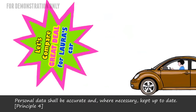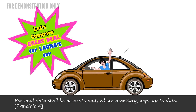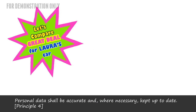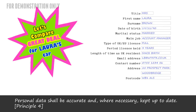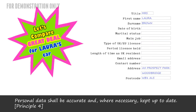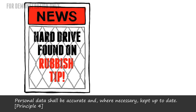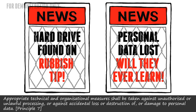It looks like Laura can get a better deal on her car insurance, and she wants to change the provider. What happens to the data the old company holds about her? Well, they need to keep enough information for their records, but delete or dispose of anything that's no longer needed — making sure it's disposed of securely, of course. We've all heard the stories: hard drives found on rubbish tips, memory sticks with personal data have been lost, and so on.